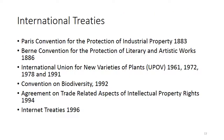International treaties: the Paris Convention for the Protection of Industrial Property came into force in 1883. The Berne Convention for the Protection of Literary and Artistic Works, 1886. The International Union for New Varieties of Plants, i.e. UPOV, came into force in 1961, modified in 1972, 1978, and 1991. Convention on Biodiversity in 1992. Agreement on Trade Related Aspects of Intellectual Property Rights, i.e. TRIPS 1994. Internet Treaties 1996.